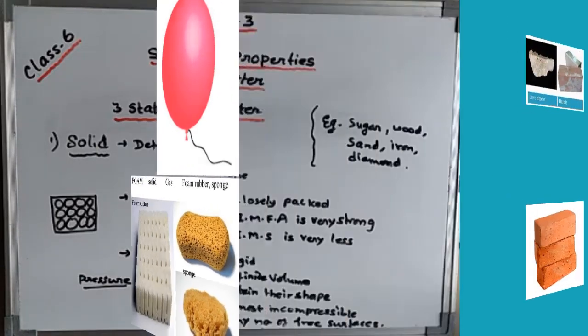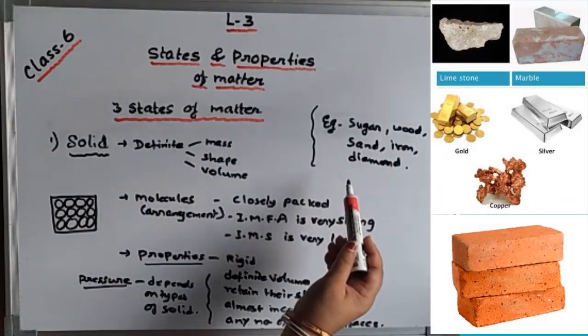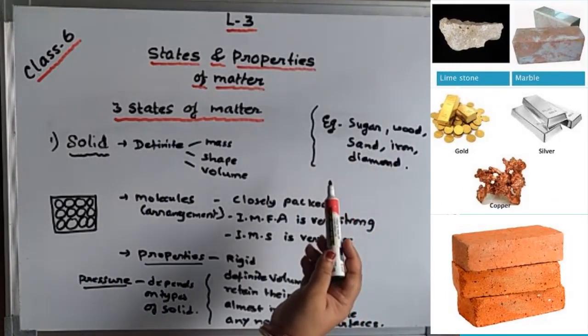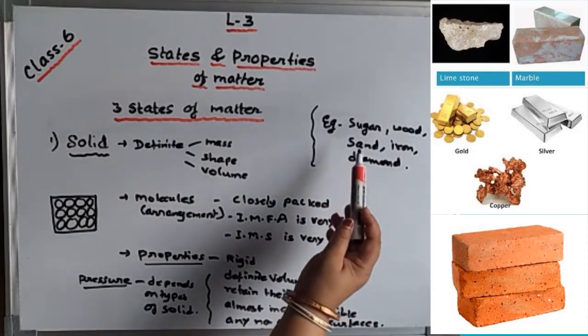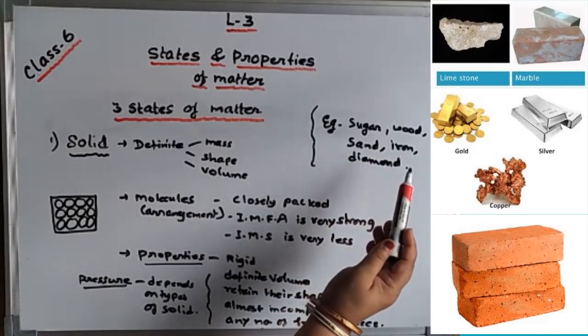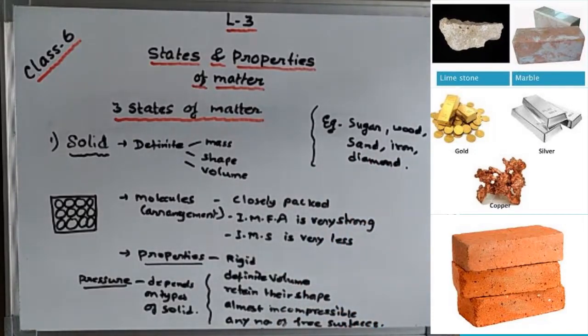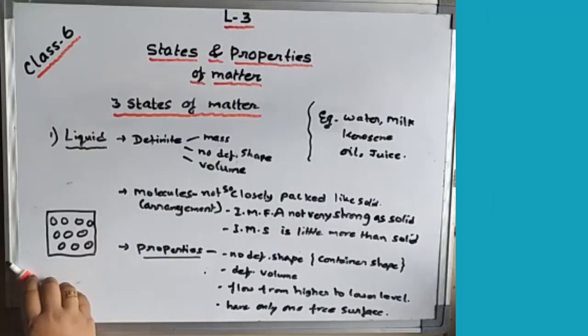Examples of solids you can take: sugar, wood, sand, iron, and diamond. These are common examples of solids we come across.